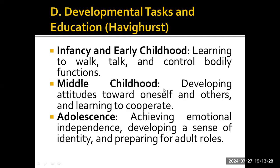In middle childhood, from 7 to 11 years, children focus on developing attitudes towards themselves and others and learning to cooperate. This stage is marked by an increase in cognitive abilities and self-awareness. Children begin to form self-concepts and self-esteem based on their achievements and social interactions. They also learn to navigate social relationships, developing skills such as cooperation, empathy, and conflict resolution. This period is crucial for establishing positive attitudes towards school, peers, and authority figures, which influences their social competence and academic success as they transition to adolescence.